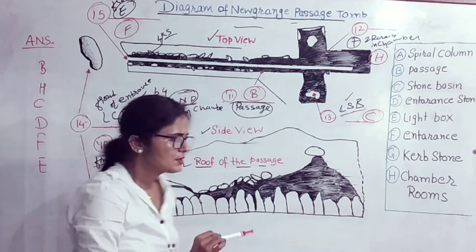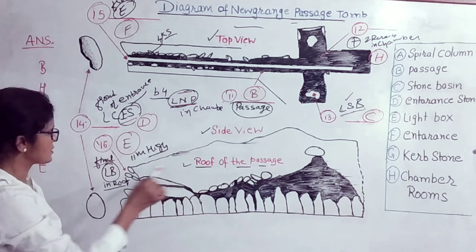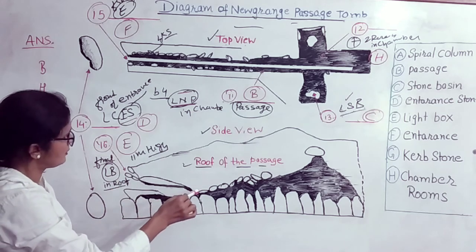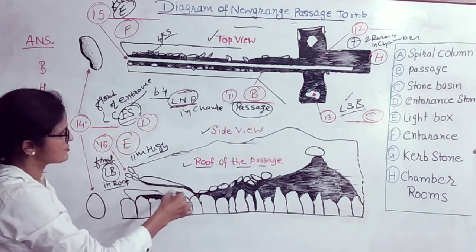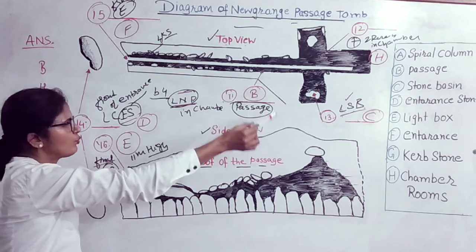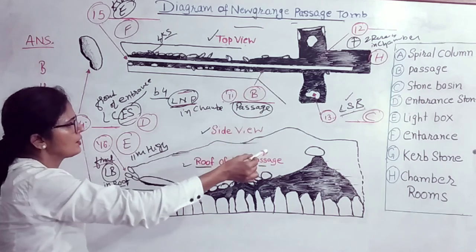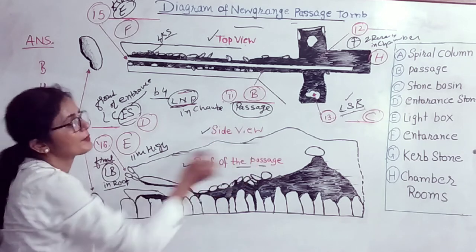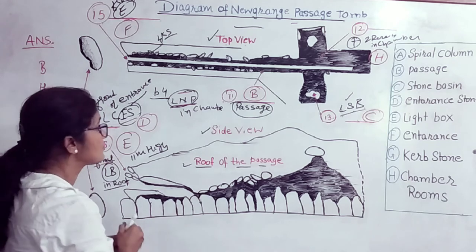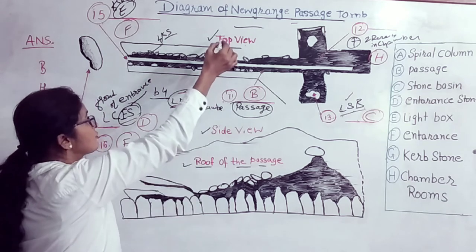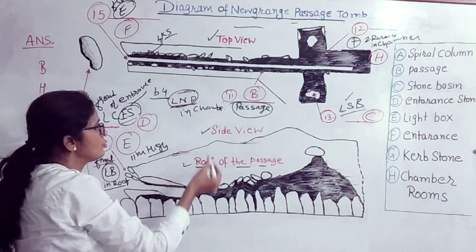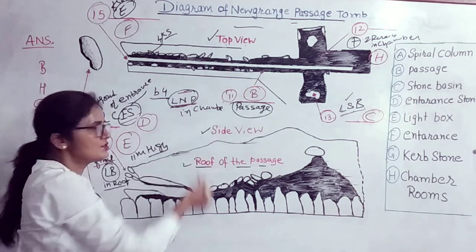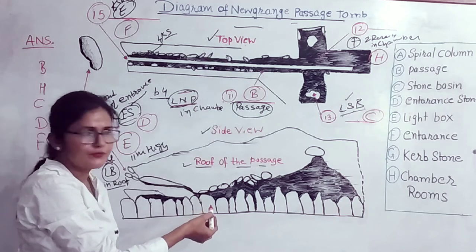It's a kind of entrance — you're entering from here. The speaker could say 'roof of the passage,' so just mark those features too. Note top view, side view, roof of the passage. I've also marked these. And those shapes are looking like stones.